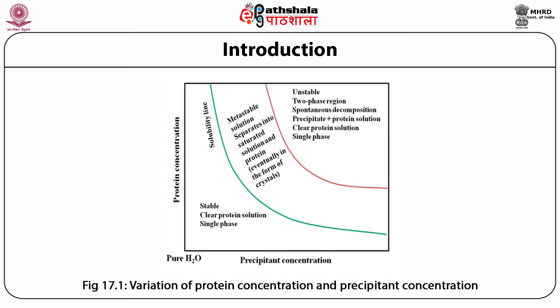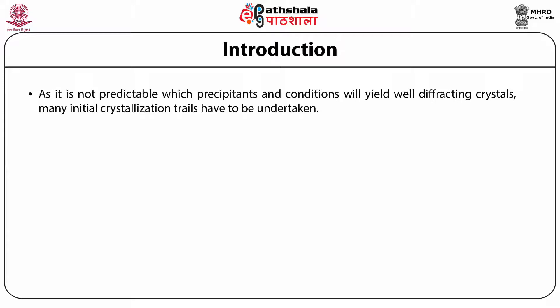Figure 17.1 shows clearly the variation of protein concentration and precipitant concentration. In the y-axis you can see protein concentration and in the x-axis the precipitant concentration. This can be divided into three parts: the lower part denotes the stable situation with clear protein solution in a single phase; the uppermost part is unstable, showing the two-phase region with spontaneous decomposition into precipitants plus protein solution; and in between, the metastable zone where separation into saturated solution and protein occurs.